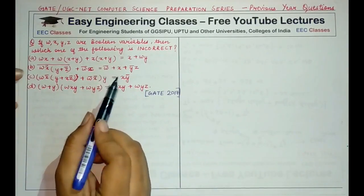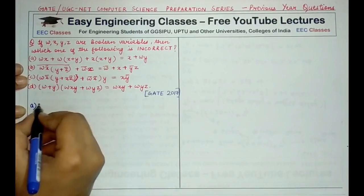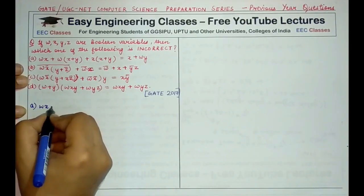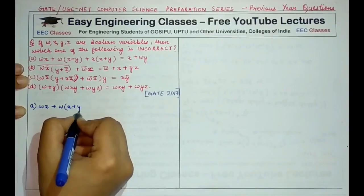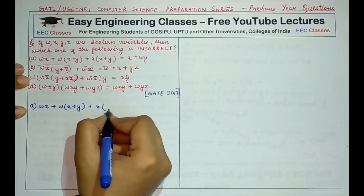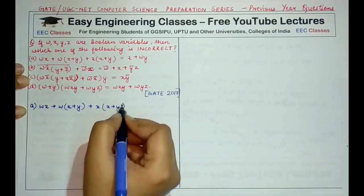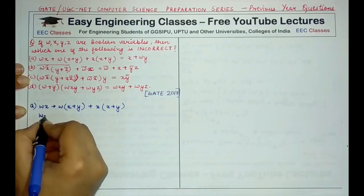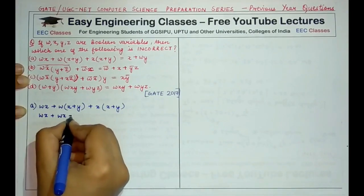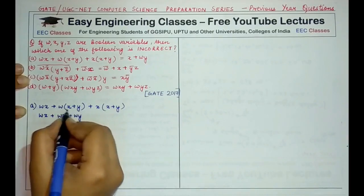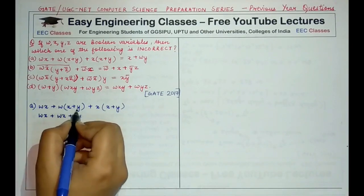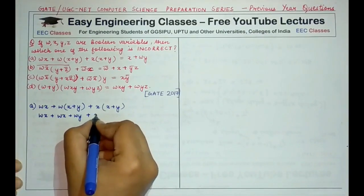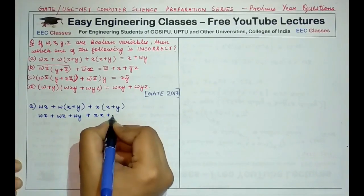Starting with option A. The left hand side is: wx + w·(x + y) + x·(x + y). Expanding this gives wx + wx + wy, applying the distributive law by multiplying w with all variables inside the bracket, plus x·x and x·y.